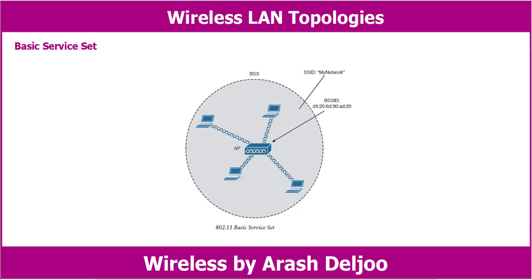Now let me explain the Basic Service Set, or BSS. The solution is to make every wireless service area a closed group of mobile devices that forms around a fixed device. Before a device can participate, it must advertise its capabilities and then be granted permission to join. The 802.11 standard calls this a Basic Service Set, or BSS. At the heart of every BSS is a wireless access point, or AP. As you can see in this figure, the AP operates in infrastructure mode, which means it offers the services that are necessary to form the infrastructure.